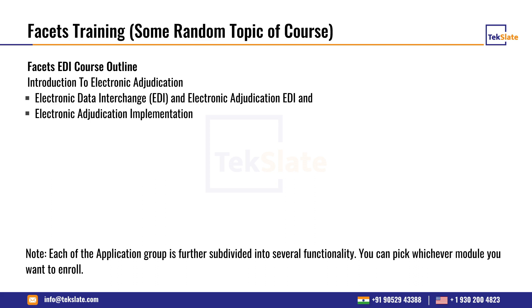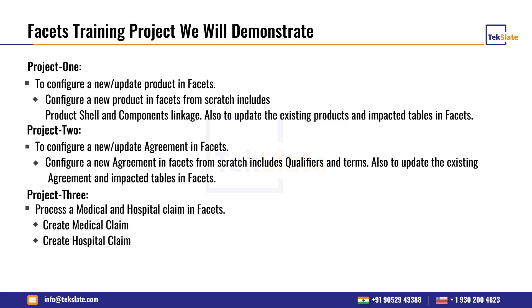Apart from this course, we'll get an introduction to EDI — what EDI is, how an EDI file is created, and how it is interpreted in Facets. An EDI file generally gets converted into X12 format before entering Facets, as a direct EDI cannot be entered. Multiple jobs take care of this process. There will also be three live projects: the first is to configure or update a new product in Facets from scratch, including creating a product shell and linking fixed and variable product components.